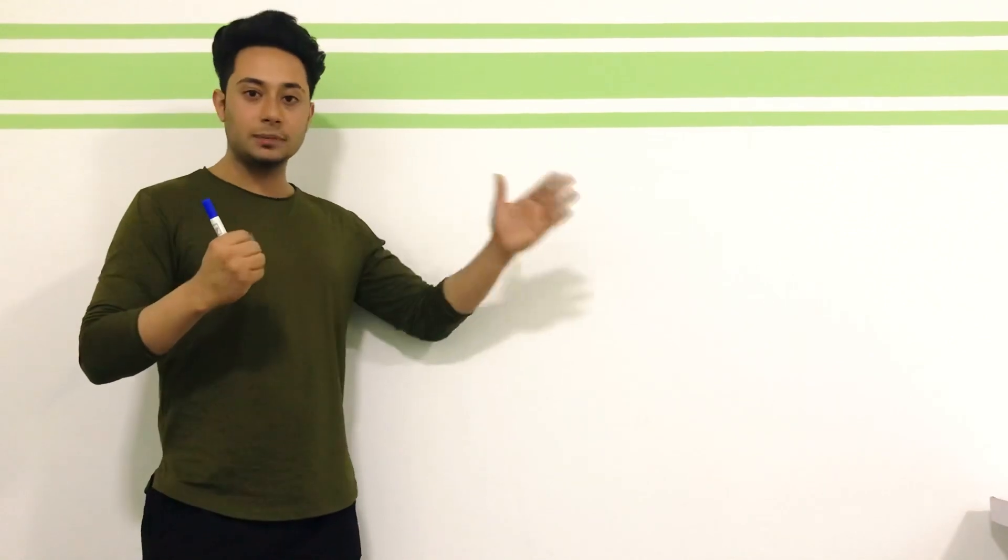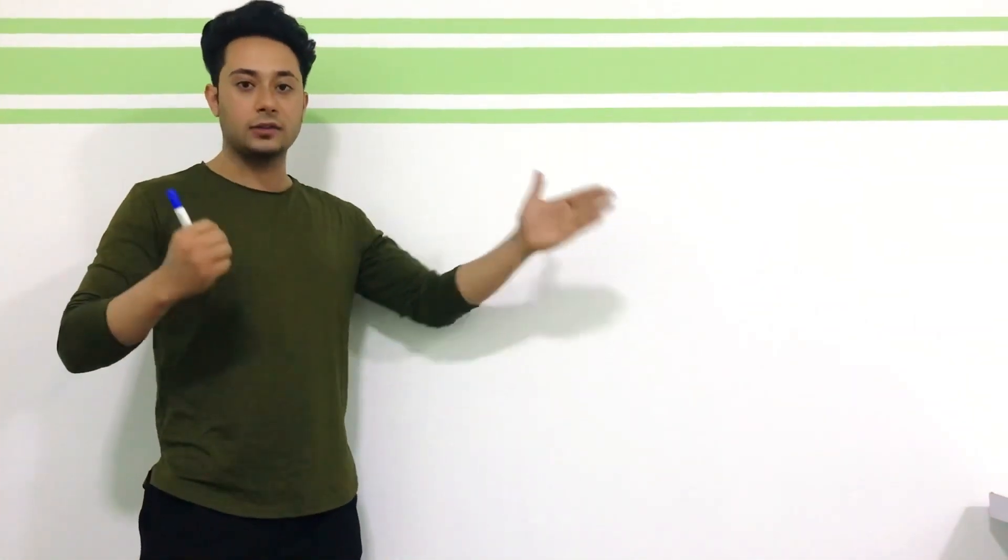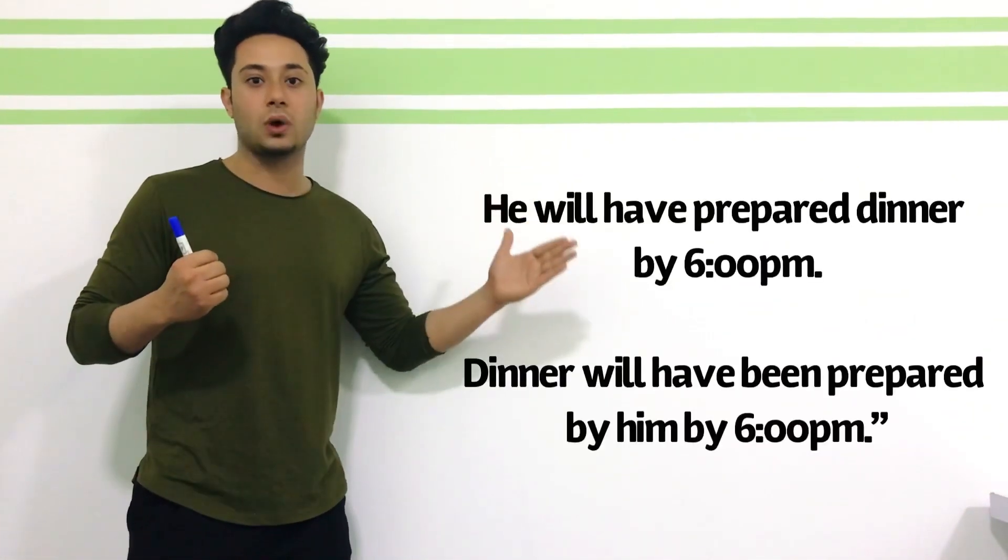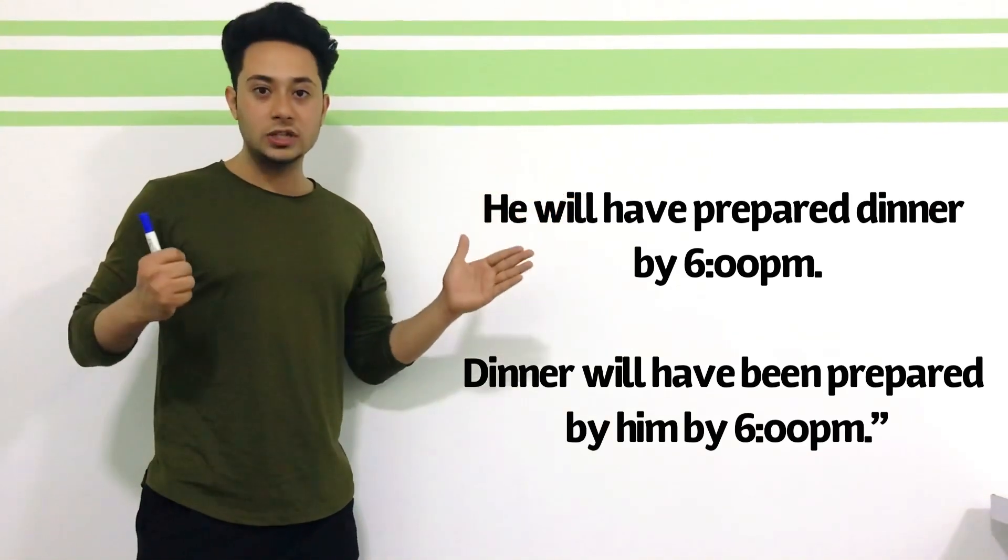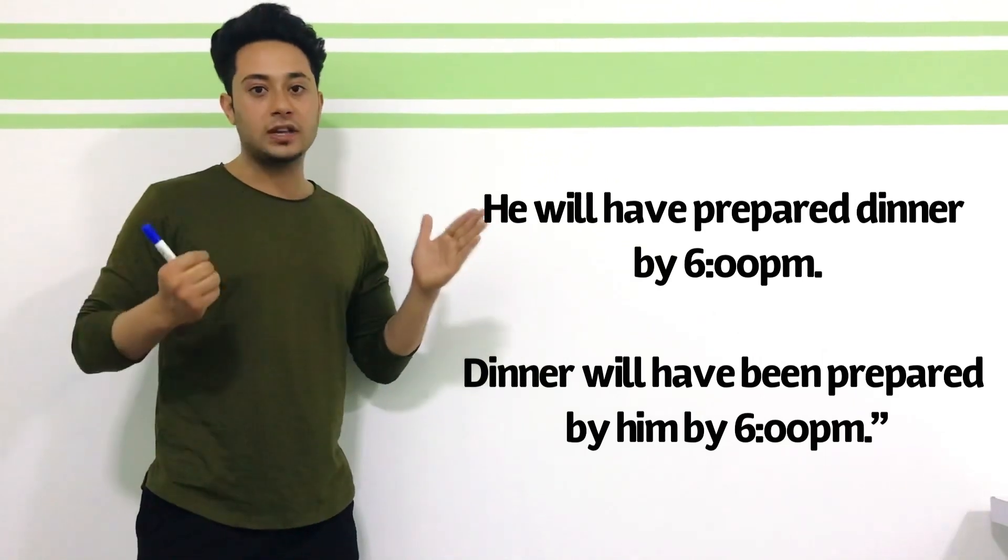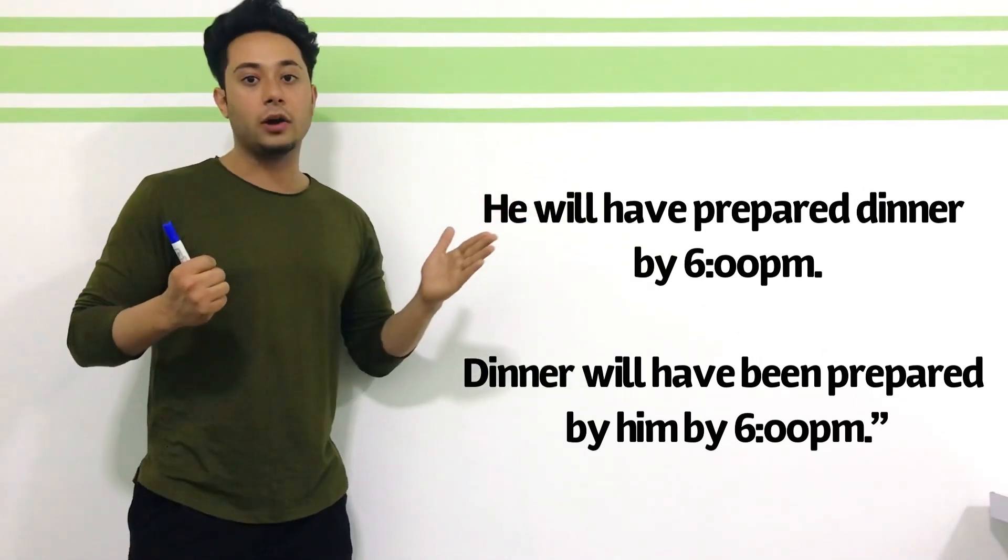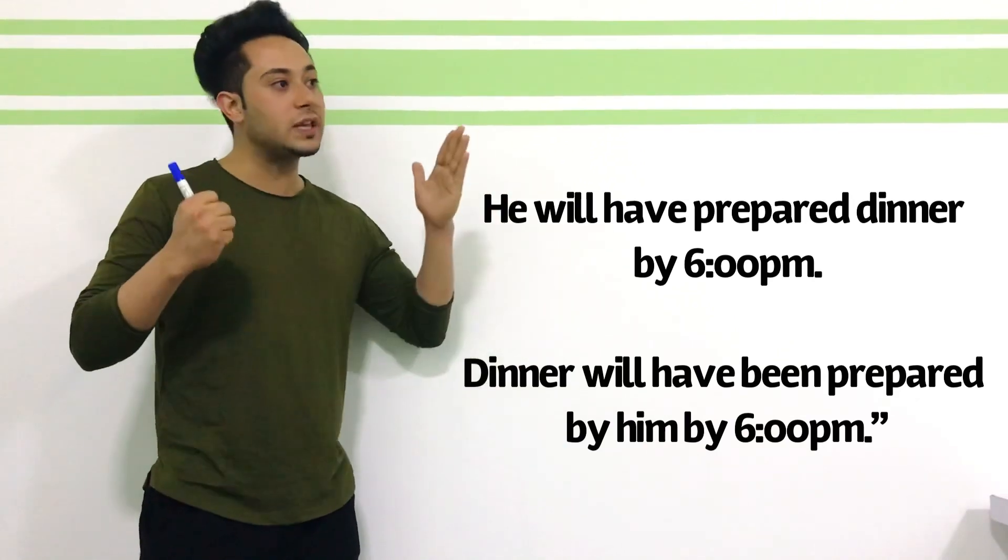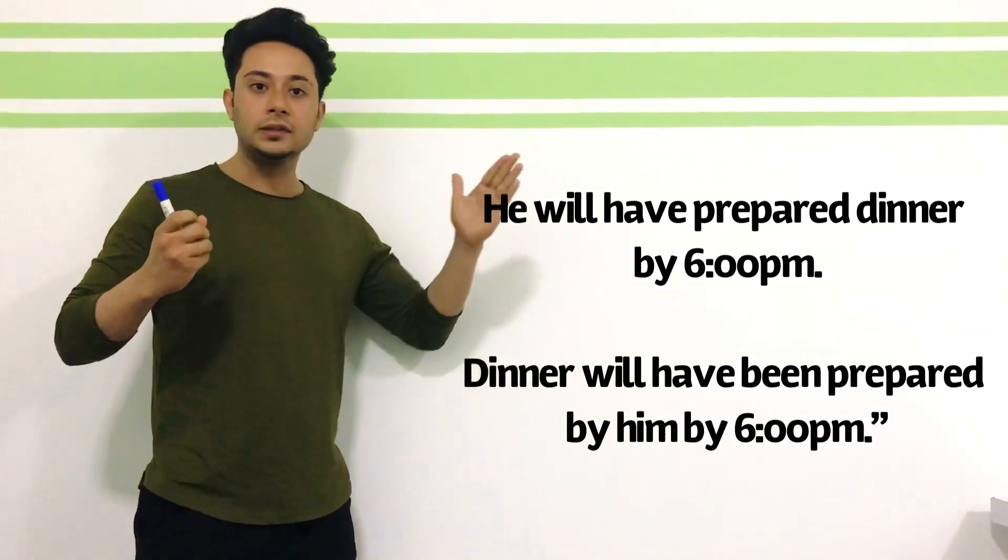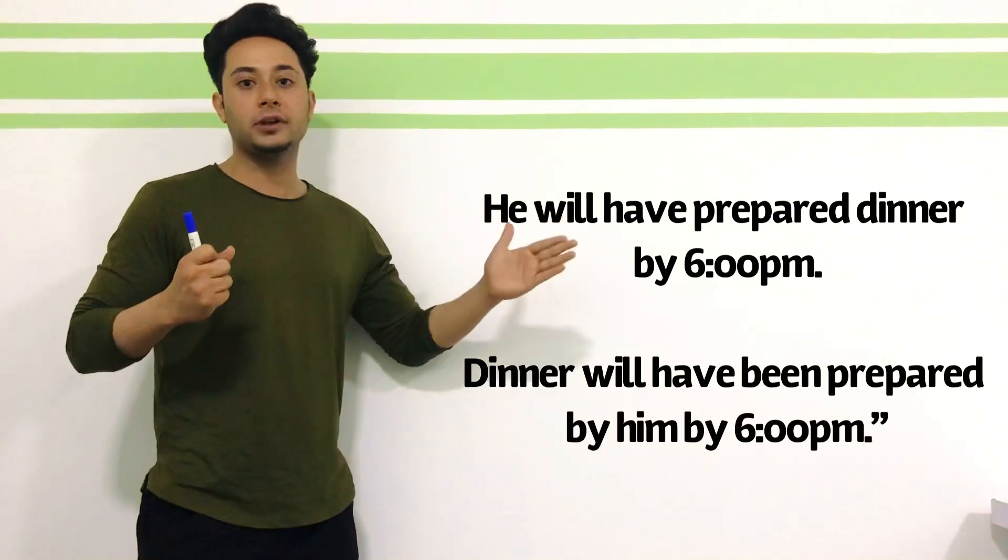Let's change the first sentence from active voice to passive voice. The first sentence was: you will have prepared dinner by 6pm. If you want to change it from active voice to passive voice, first you need to bring the object forward, or the one which received the action. The action which is going to be received is dinner. Dinner will have been prepared by 6pm.